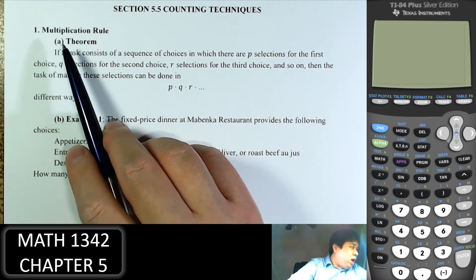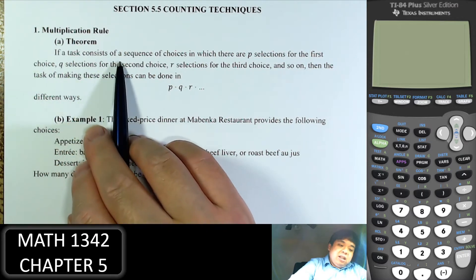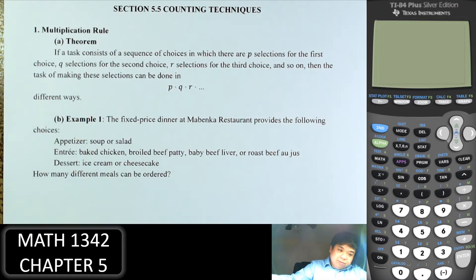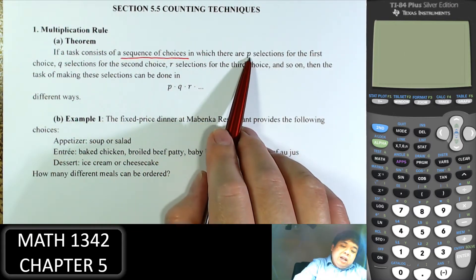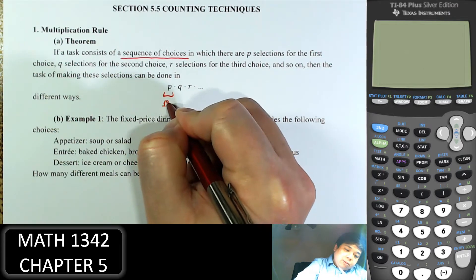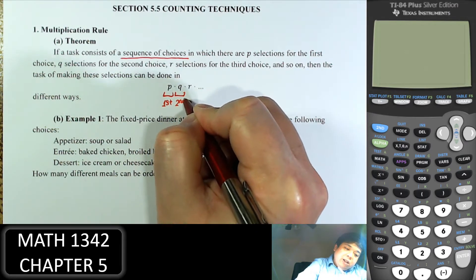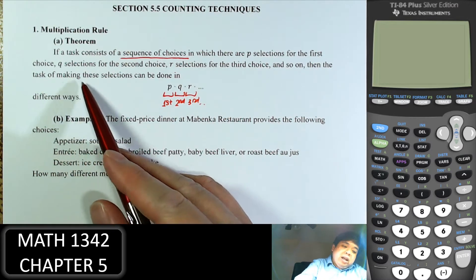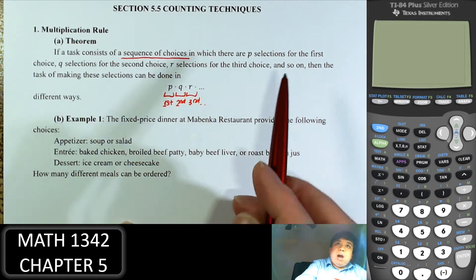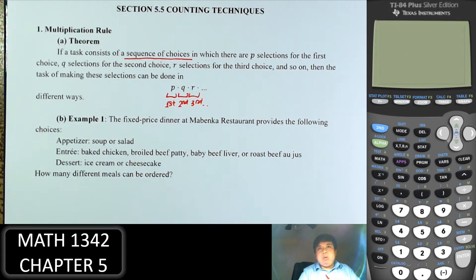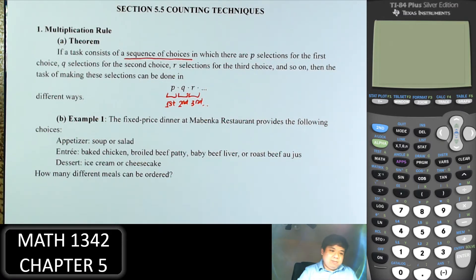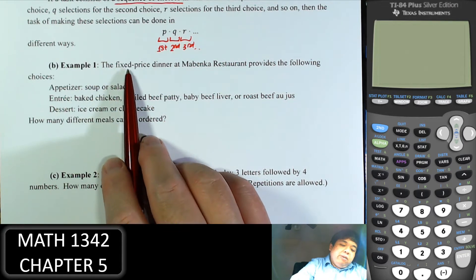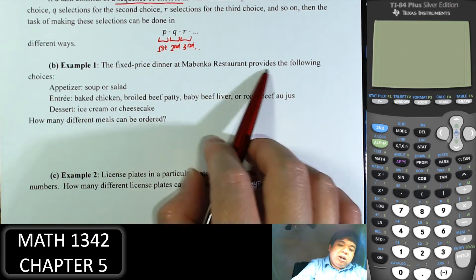The first counting technique is the multiplication rule. It says that if a task consists of a sequence of choices, with P selections for the first, Q for the second, R for the third, and so on, then the total number of ways to make this selection is found by multiplying them together. Look at the first example: a fixed price dinner at a restaurant provides the following choices.